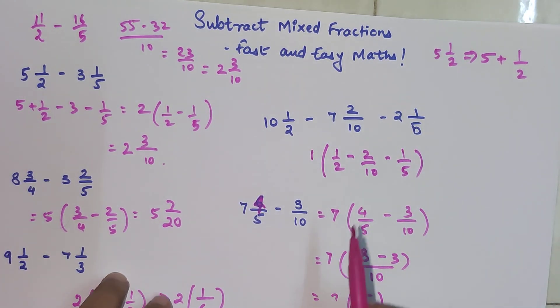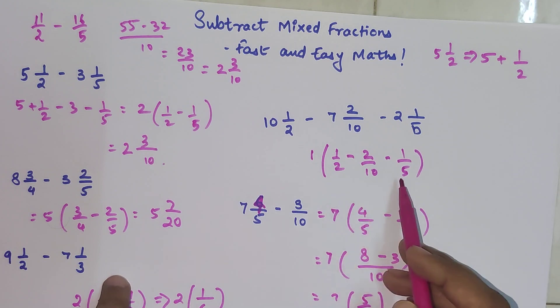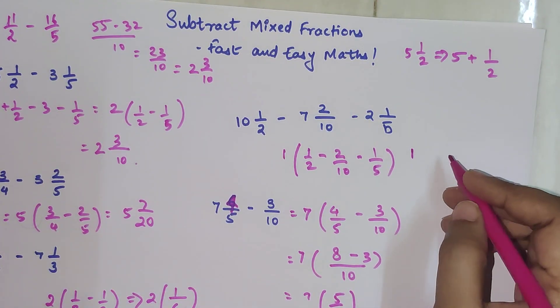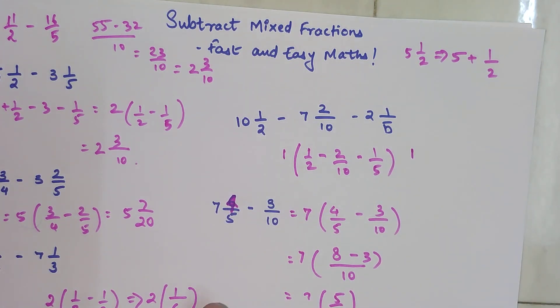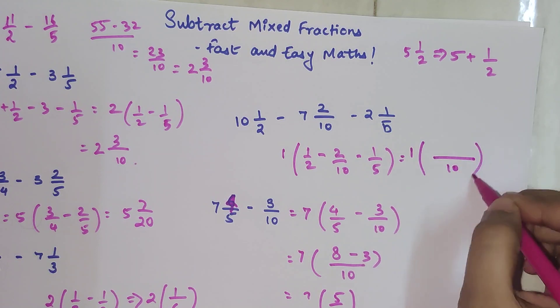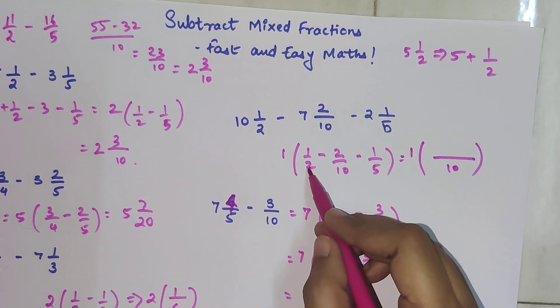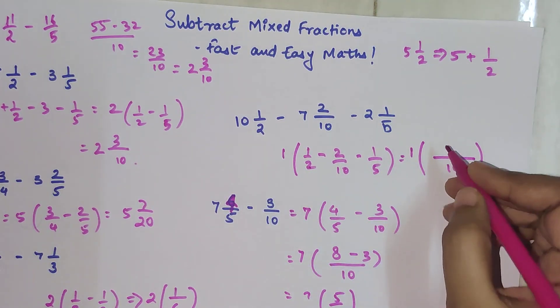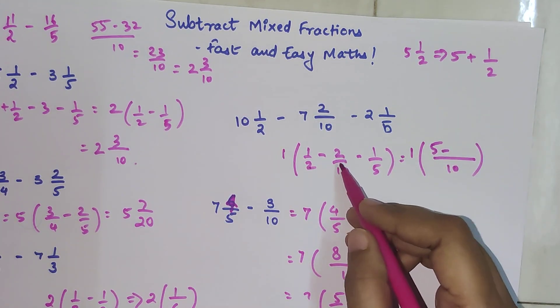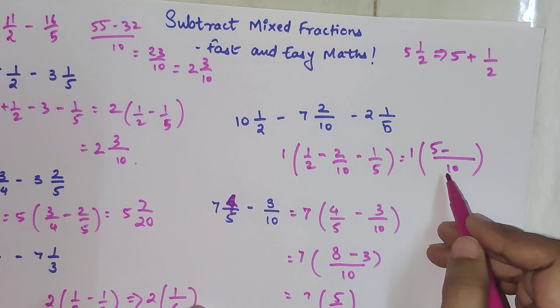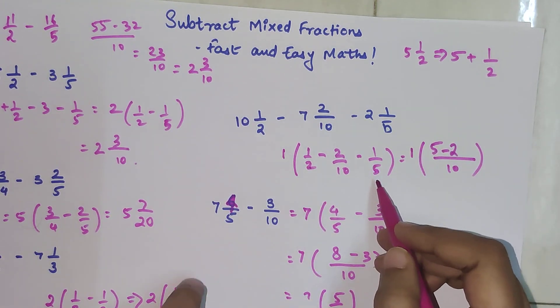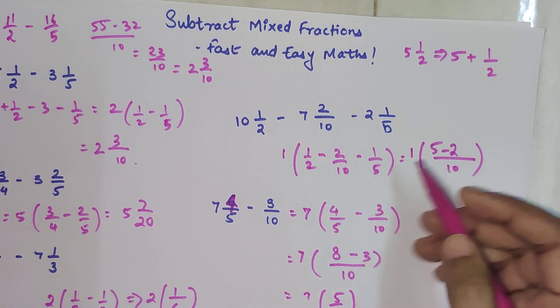And now you're going to get 1/2 minus 2/10 minus 1/5. If you look closely, 10 comes in 2 stable as well as 5 stable. So here your answer will now shift to 1 and your LCM is 10. In order to make this 10, we're going to multiply by 5, so 1 will get multiplied by 5.